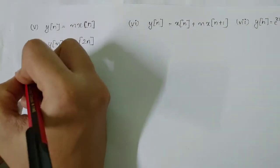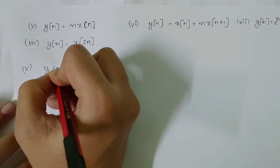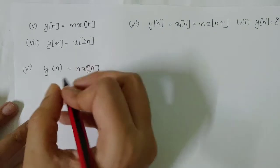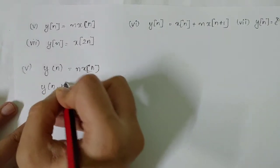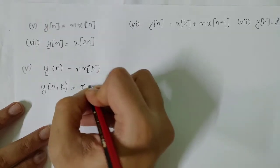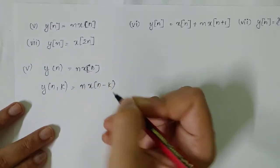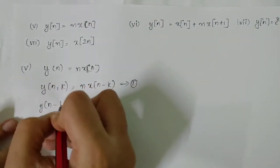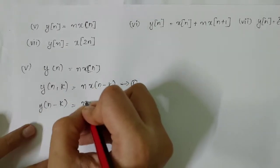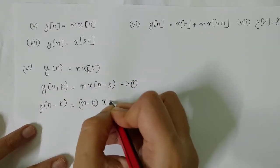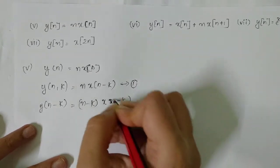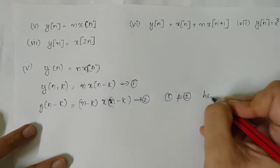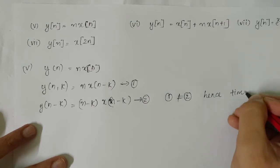The next question: y[n] = n·x[n]. So y[n,k] = n·x[n−k], that is the first equation. Delaying the output: y[n−k] = (n−k)·x[n−k], that is the second equation. Since one is not equal to two, hence the system is time variant.